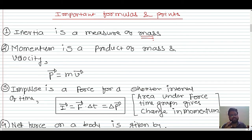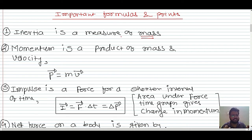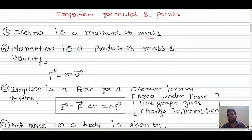The third type is inertia of direction — the inability of a body to change its state of direction. For example, if you are in a bus and the bus takes a turn, you tend to fall in the direction opposite to the turn. This is called inertia of direction.